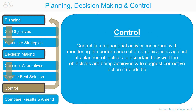Control is a managerial activity concerned with monitoring the performance of an organisation against its planned objectives, to ascertain how well the objectives are being achieved and to suggest corrective action if needs be. After a plan is made, the plan should be implemented. Management need to monitor this implementation to ensure that the plan works as expected. This is done through the comparison of actual and planned results.